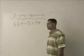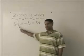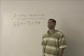We're going to solve a two-step equation. In this equation, we have 6 and 1/3 times the number x take away 3 is equal to 54.